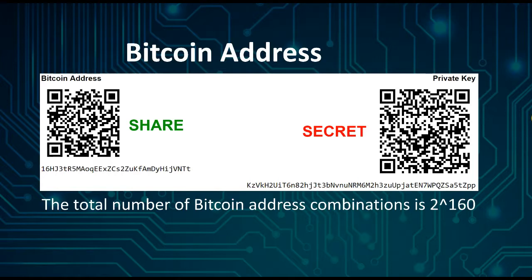So let's look at generating a Bitcoin address very simply at bitaddress.org. You see here on the left side: share. On the right side you see: secret. So what would you put into Swiss Gold Global back office?